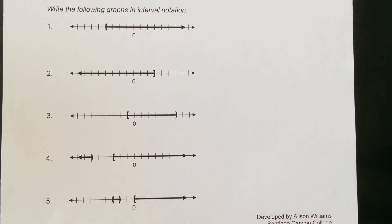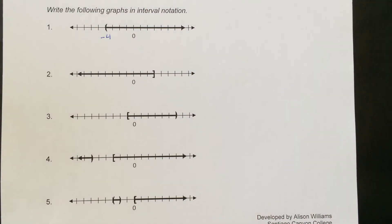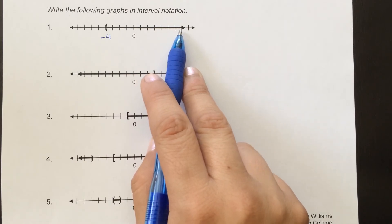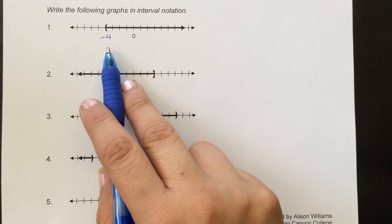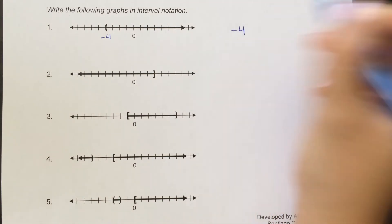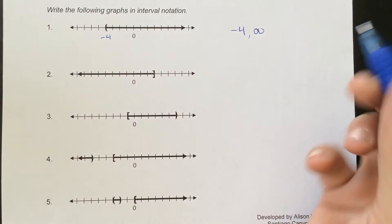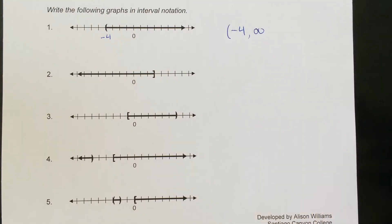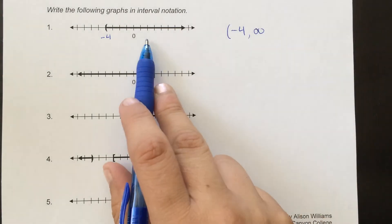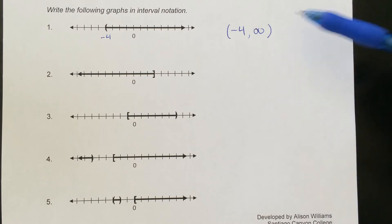Now I want to write interval notation for each of these graphs. Looking at the first graph, it starts at negative 4 with a parenthesis and goes all the way to the right with an arrow indicating it goes to infinity. We write interval notation from the smallest number to the biggest — left to right — so negative 4 to positive infinity. Because it's a parenthesis, negative 4 is not included. And we always use a parenthesis with infinity because you can never actually equal infinity.